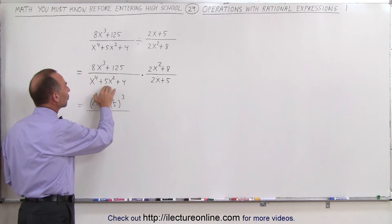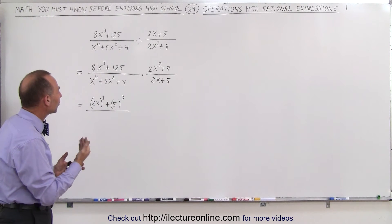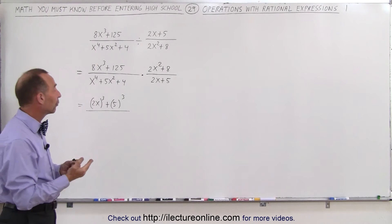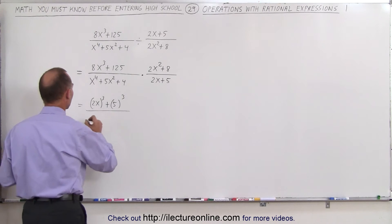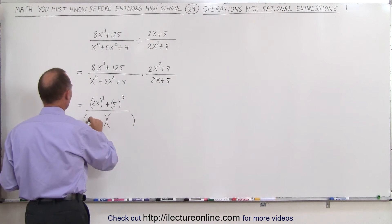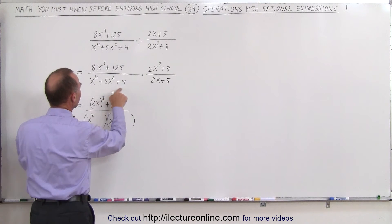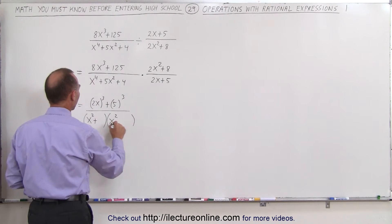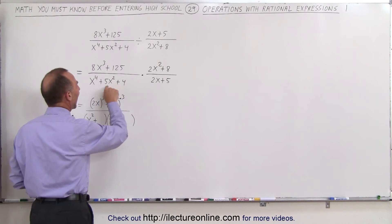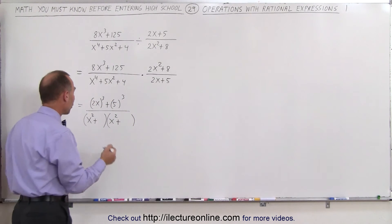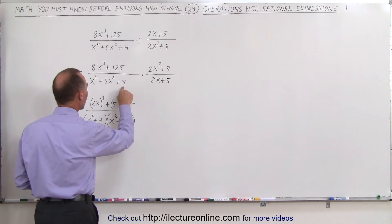This is x to the fourth plus 5x squared plus 4. This looks a lot like x squared plus 5x plus 4, but instead of x squared we have x to the fourth, instead of x we have x squared. So this can also be factored as follows: x squared times x squared, because x squared times x squared gives you x to the fourth. Everything is positive, plus and plus. Here I'm looking for two numbers when I multiply I get 4, when I add them I get 5. The only option is 4 and 1, so plus 4 and plus 1, because 4 times 1 is 4 and 4 plus 1 is 5. This is the factored form of this trinomial.